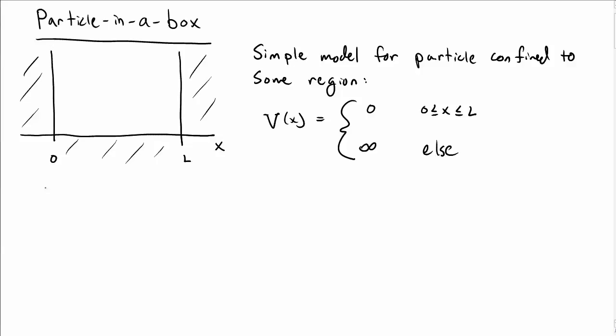Let's talk about one of the simplest models for a particle located in some region. For this, we'll consider the potential V(x) to be 0 inside 0 to L and infinity everywhere else. So it's a box with infinitely strong walls.